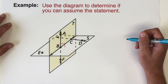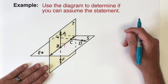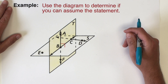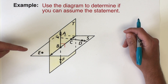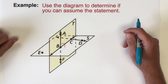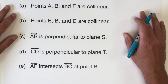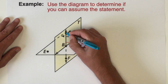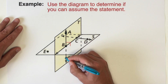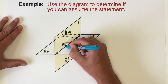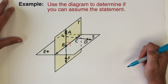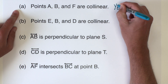Our final example asks us to use a diagram to determine if we can assume five statements. The first statement says points A, B, and F are collinear. Looking at the diagram, I can see a line connecting those three points A, B, and F. So the answer to statement A is yes, we can assume that's true.